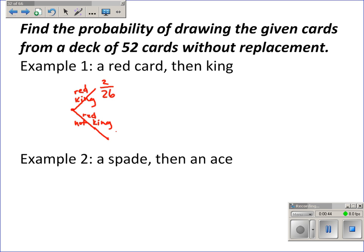This down here would be drawing a red card that's not a king. Probability of that happening would be 24 out of 26, since the other 24 cards are not kings. But it's still a red card.